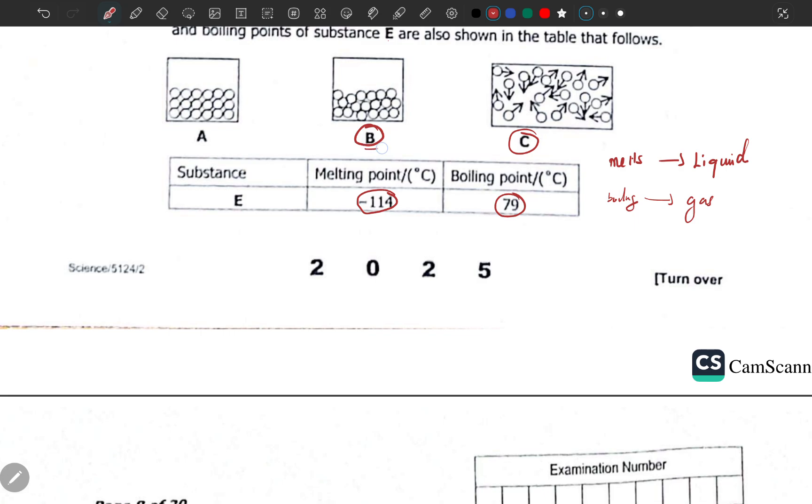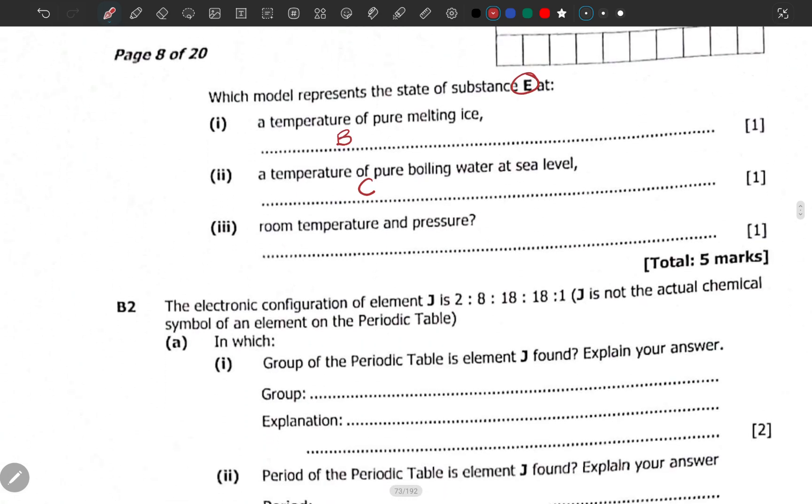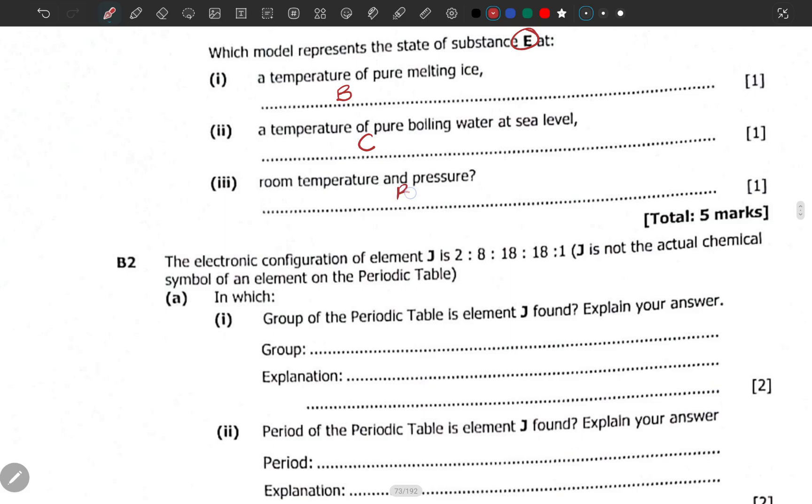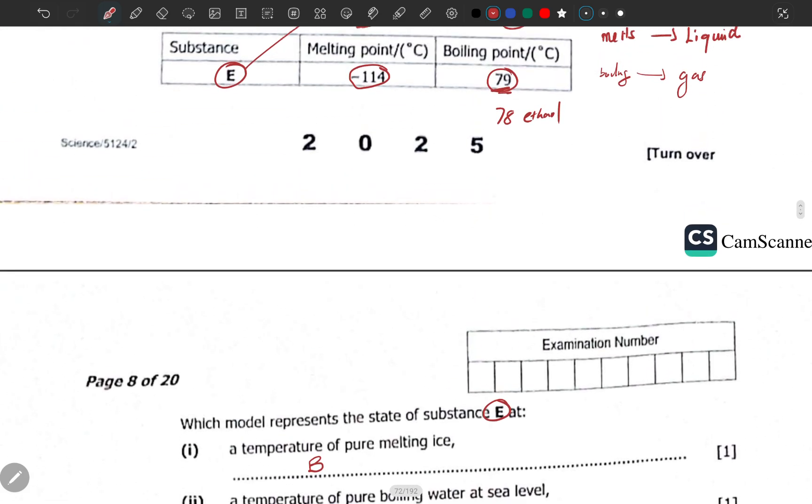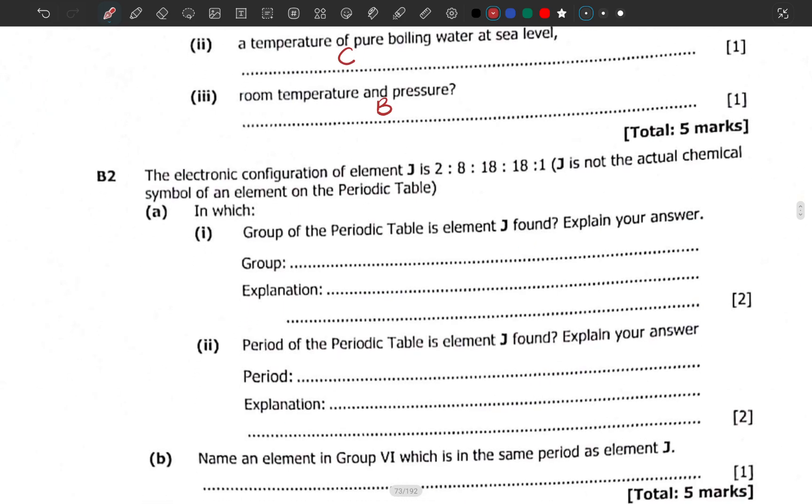So it is a liquid because its boiling point is somewhere there and it's closest to the boiling point of ethanol or alcohol. This substance E belongs to state B, which is a liquid. So it is a liquid at room temperature and pressure. This is how this question was supposed to be answered. Next time we're going to go to B2.